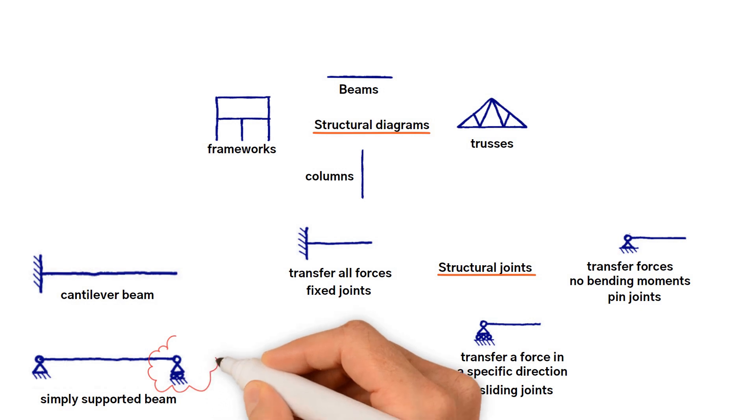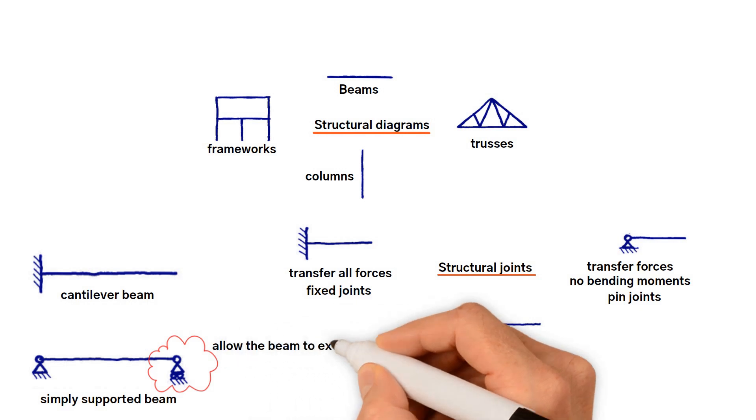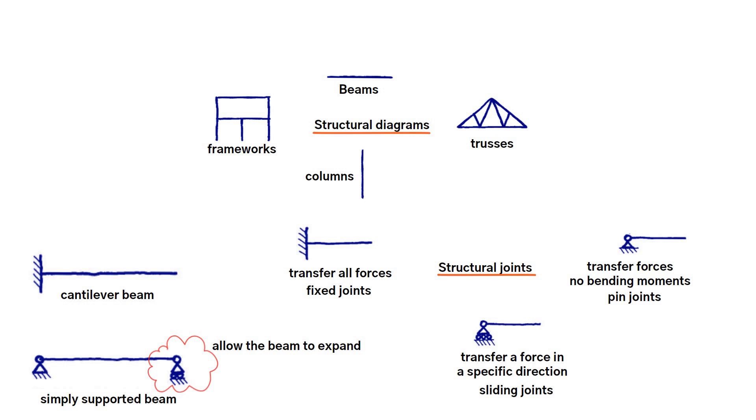It should be noted that under the right-hand support of the simply supported beam, there are two circles that represent rollers that allow the beam to expand. This is a convention, but also means if the beam was heated it could expand without restraint.